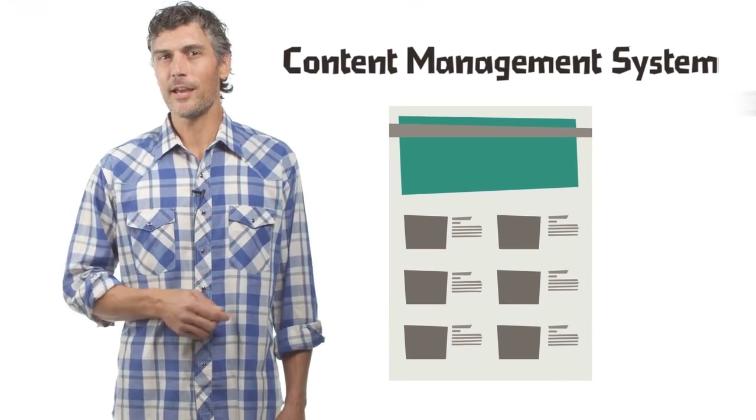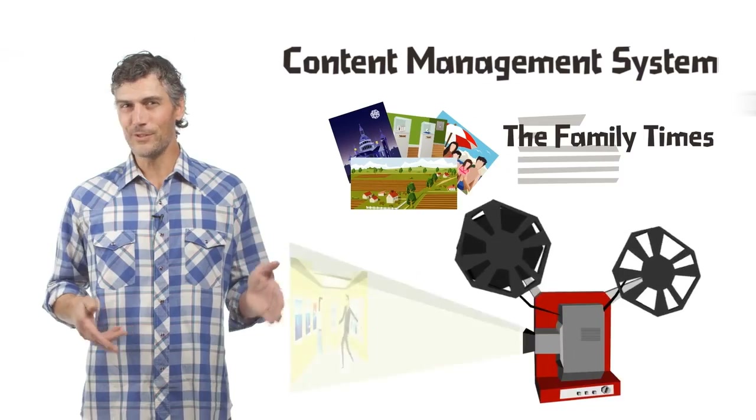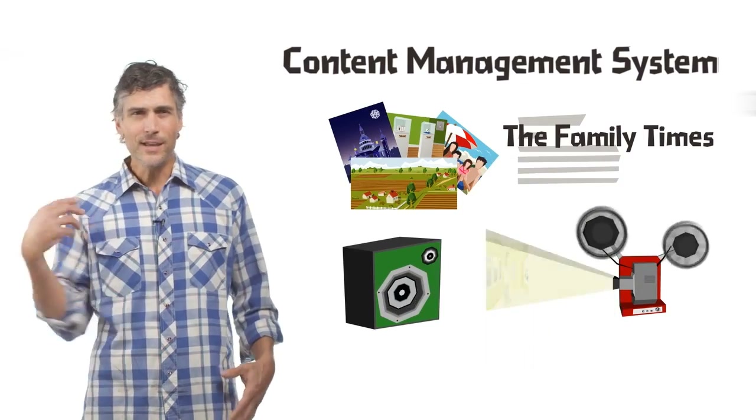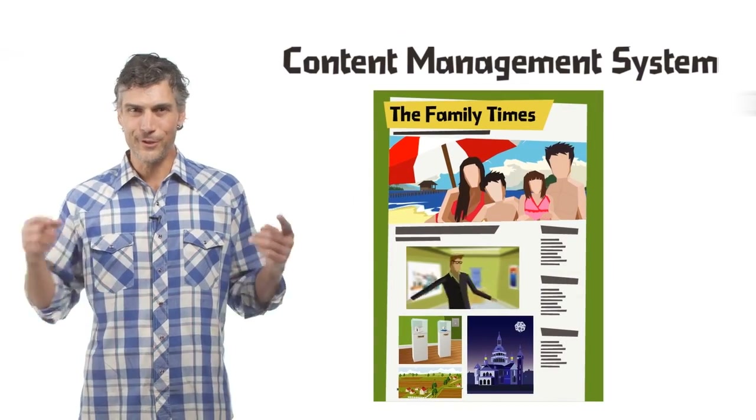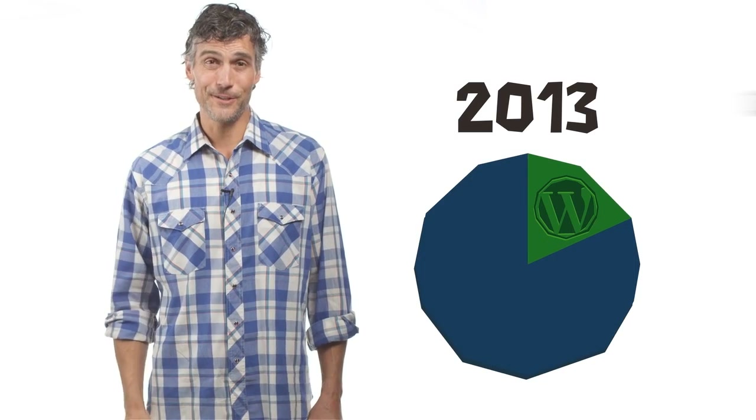It's designed to take all the content you throw at it — pictures, text, movies, music, and all that stuff — and stitch it together into a website for you. WordPress is an extremely popular content management system, partly because it's powerful but also because it's really easy to use. One out of five people use it to build their websites, and as of 2013, over 18% of existing websites already use it.